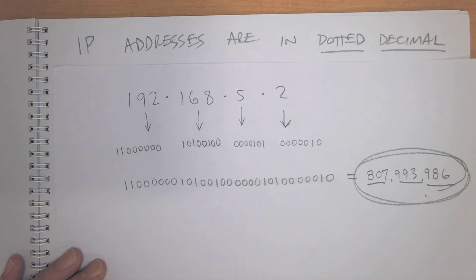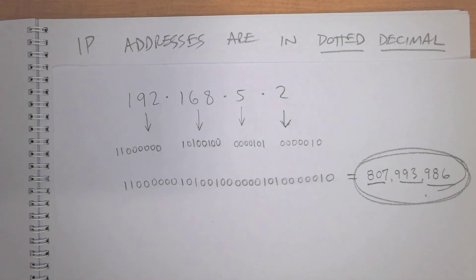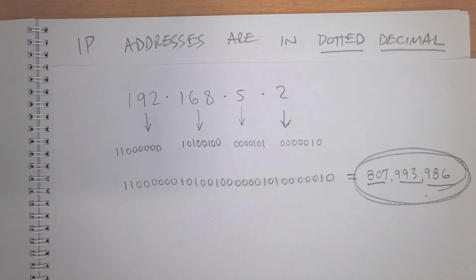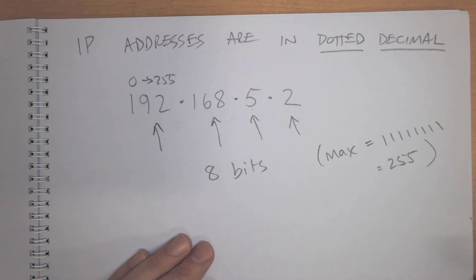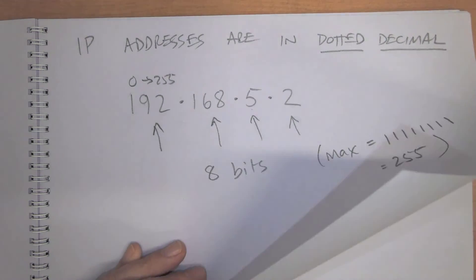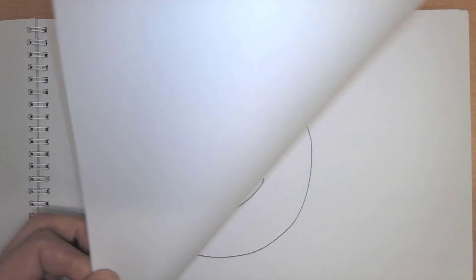Now you know how to convert an IP address into binary. Knowing how to do that, and knowing that IP addresses are actually binary numbers, will help you understand more complicated things like subnetting and other topics.